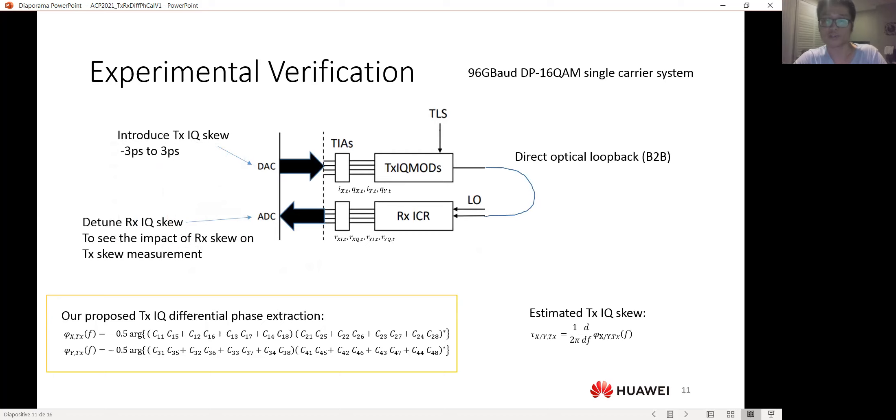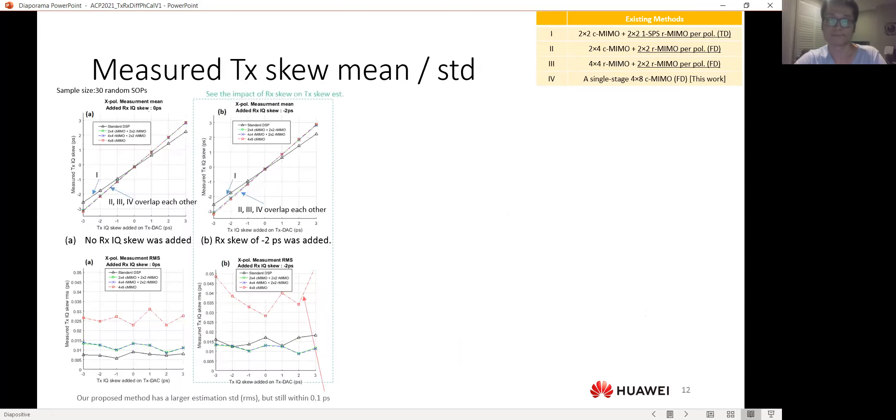Then we also measure the transmitter skew, and we detune the transmitter skew from negative 3 picoseconds to positive 3 picoseconds. We also change a little bit the receiver skew to see the impact of the receiver skew on the transmitter skew measurement. And the measurement was taken over 30 random SOPs, and we take the mean of our methods and also compare with other methods.